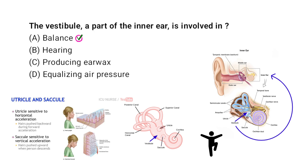When the head moves, tiny crystals in the vestibule shift, stimulating these receptors. The brain then processes this information to help maintain balance and posture. This system works with the semicircular canals, another part of the inner ear involved in balance.